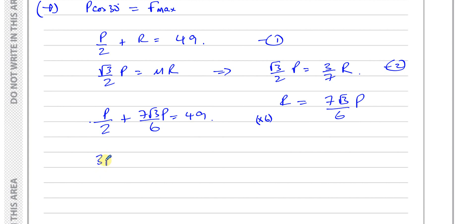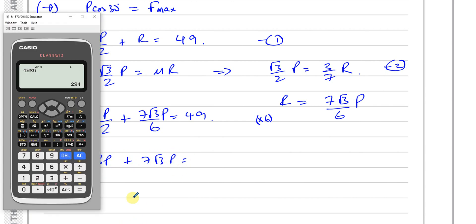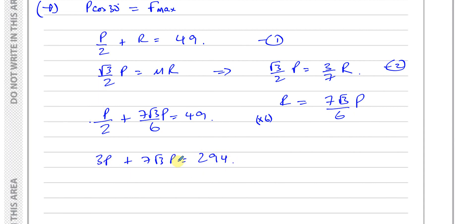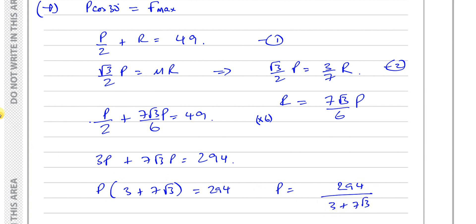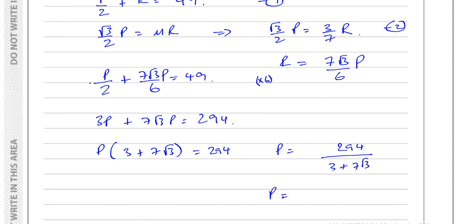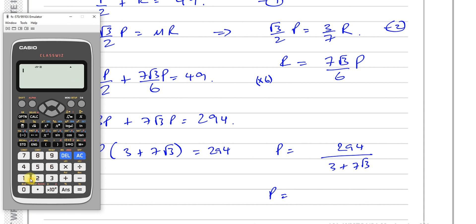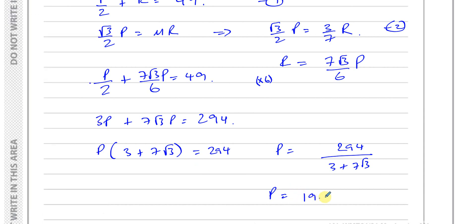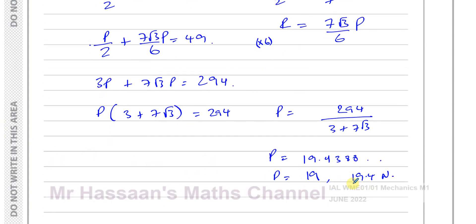So P equals 294 over (3 plus 7 root 3). That gives us 19.4388, so we can write the answer as 19.4 newtons. You can write it to 2 significant figures or 3 significant figures — either will be acceptable in the exam, since we're using g.